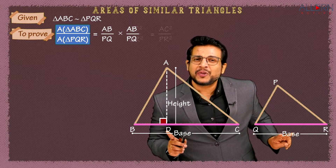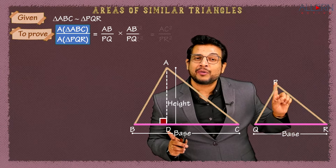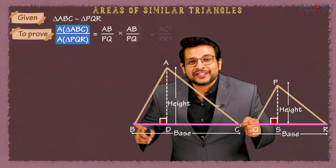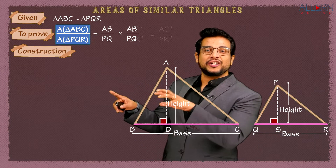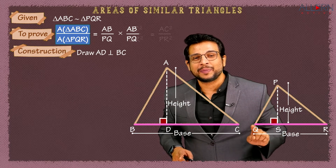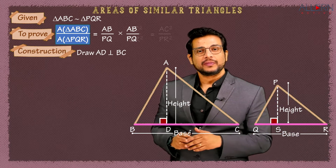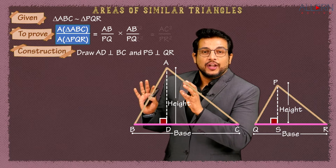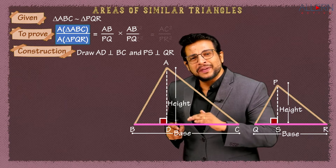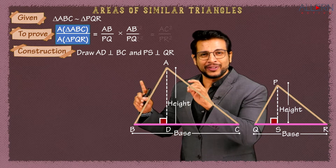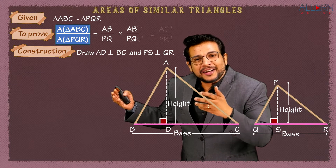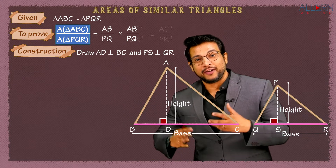So we are doing a construction here. We draw AD perpendicular to BC. For the other triangle, QR is the corresponding base, and the height is dropped from P — giving PS perpendicular to QR. So in the construction we write: draw segment AD perpendicular to side BC, and segment PS perpendicular to side QR.